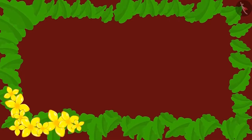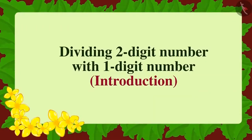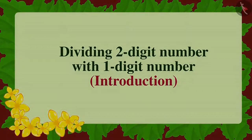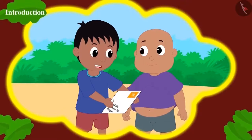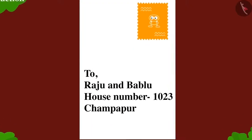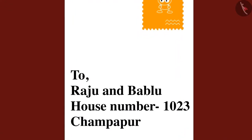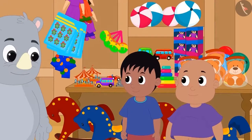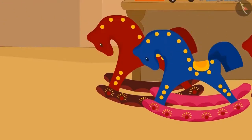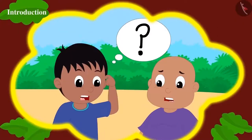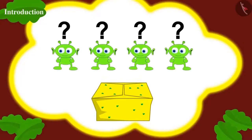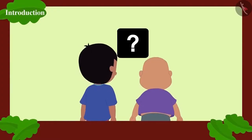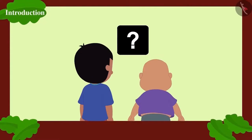In this lesson, we will learn how to divide two-digit numbers by a one-digit number. Raju and Bablu received a letter from Jeev, who is coming to celebrate Diwali along with his friends. Raju and Bablu went to Gagu's cracker shop and bought a box of 12 flower pots. They are thinking: if they divide the flower pots equally among all of Jeev's friends, how many flower pots will each friend get?